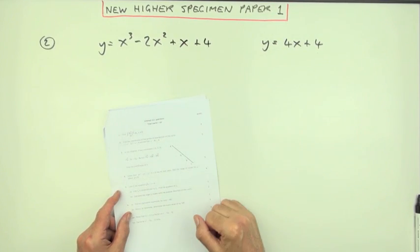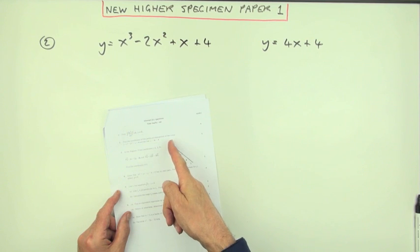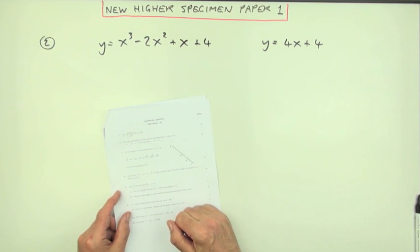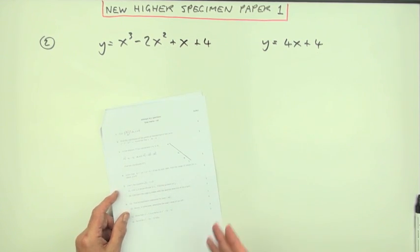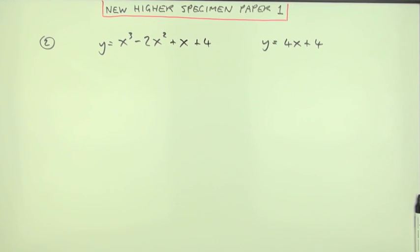Number two from this new higher specimen paper number one: the intersection of a line with a curve. Find the coordinates of the point of intersection of this curve with this line for five marks. Now you could just go straight ahead with the algebra, but you can visualize that.